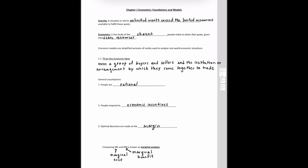So what is this class about? Economics is the study of choices people make to attain their goals given scarce resources. It's essentially the study of decision-making given scarcity. Scarcity is a situation in which unlimited wants exceed limited resources available to fulfill those wants. Scarcity is the economic problem that all societies face and must solve.